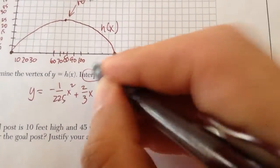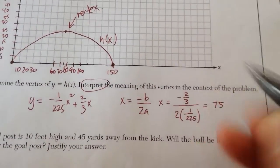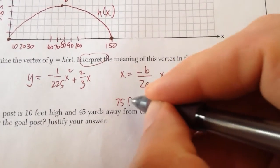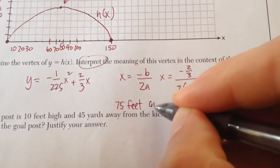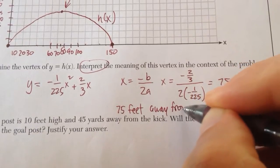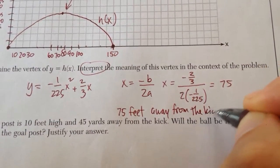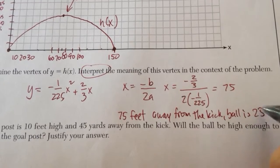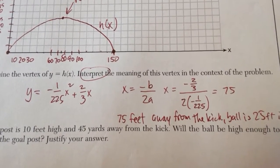Now, it says interpret the meaning. This means at 75 feet away from the kick, the ball is 25 feet in the air.